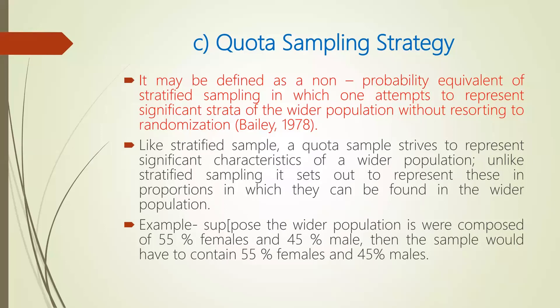We will continue with the next part, that is quota sampling strategy. It may be defined as a non-probability equivalent of stratified sampling. There is similarity in some ways between quota and stratified sampling. In stratified strategy you are going to take random sampling, you are not going to keep the percentage of sample in a particular way, but in quota sampling you have to maintain the percentage-wise proportion of the population in the sample.